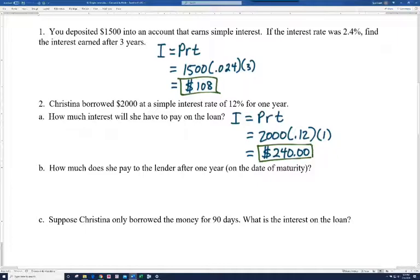Those are the kinds of decisions that you want to make or that you have to make. Let's look at B. How much does she pay to the lender after one year? We call that the date of maturity, the date that she has to pay the money back. Well, let's see. She borrowed $2,000, plus she has to pay back the $240 in interest, and so she's going to end up paying $2,240.